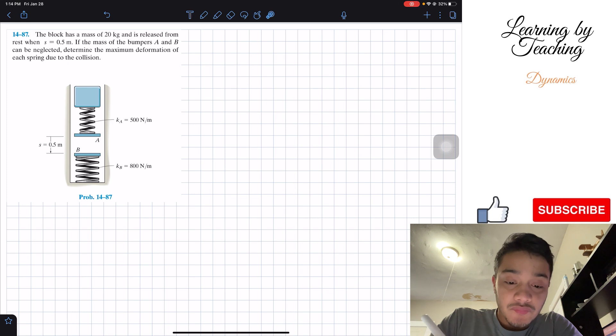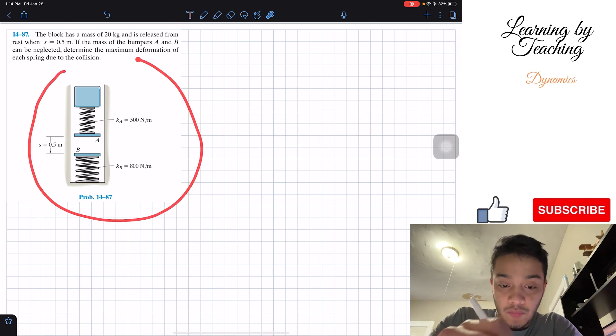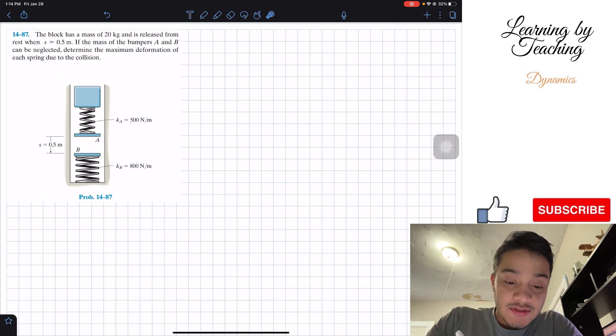As we see here in this figure, we got these two springs, spring B and spring A, and we have this block that is basically going to be released and the weight is going to push it down.